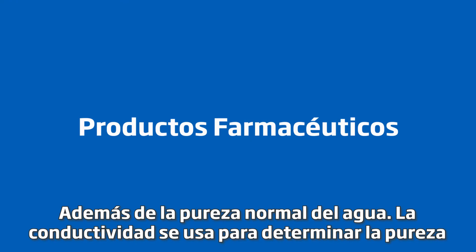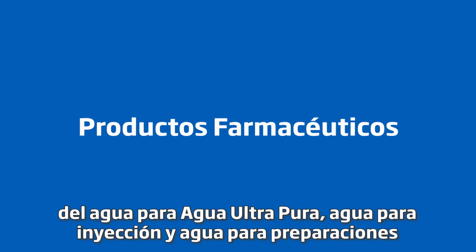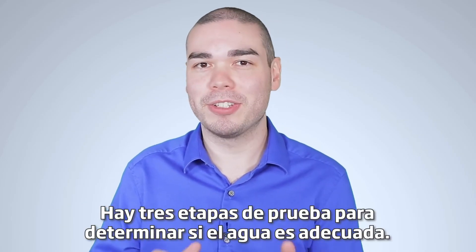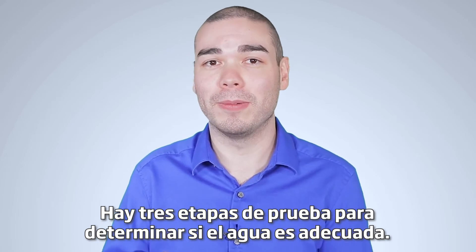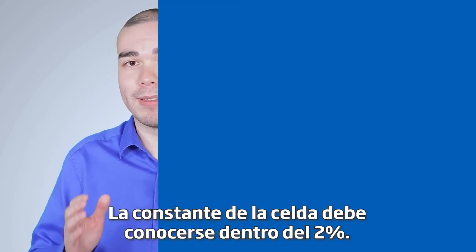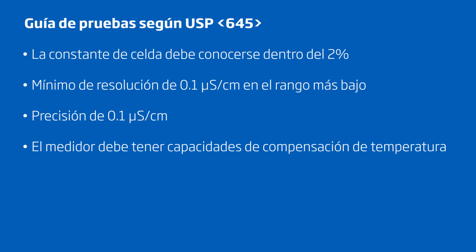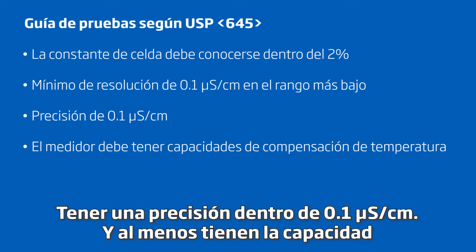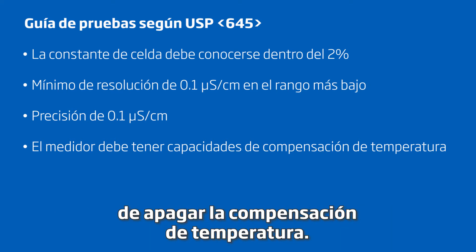Besides normal water purity, conductivity is used to determine water purity for ultra-pure water, water for injection, and water for drug preparations. There are three stages of testing to determine if the water is suitable. The stages have very strict parameters, including the cell constant must be known within two percent, a minimum resolution of 0.1 microsiemens per centimeter at the lowest range, an accuracy of within 0.1 microsiemens per centimeter, and at least the ability to shut off temperature compensation.